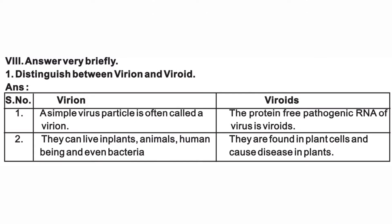Answer briefly — Virion and Viroid. Virion: A simple virus particle is often called a virion. Viroid: The protein-free pathogenic RNA of viruses is a viroid. They can live in plants, animals, human beings, and even bacteria. Viroids are found in plants and cause diseases in plants.